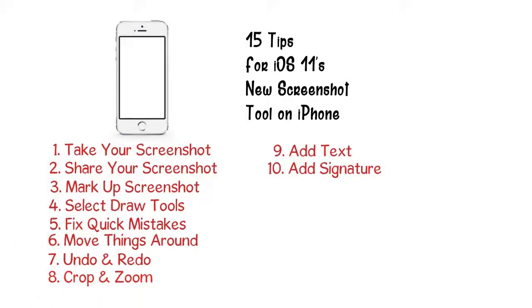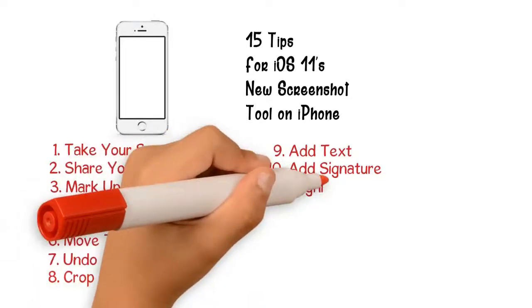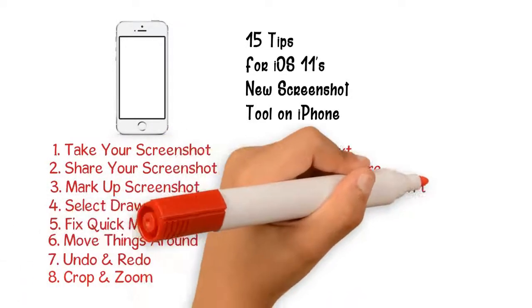If you want to create a signature that you use all of the time, or any random word or phrase that you use a lot, just tap on the plus icon and select signature. If you don't have any current signatures, you'll be prompted to create one. If you do, you can simply select which one you want to add.